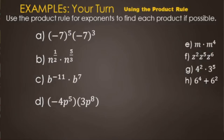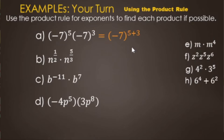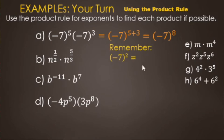Looking at letter A: we have negative seven to the fifth power times negative seven to the third power. Same bases, so we just add the exponents, giving us negative seven to the eighth power.